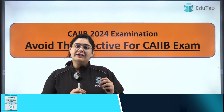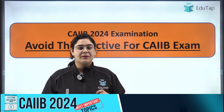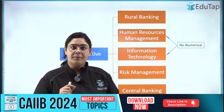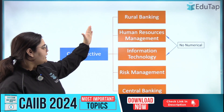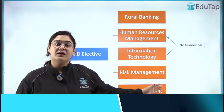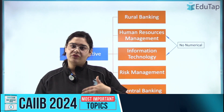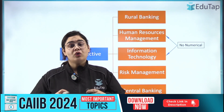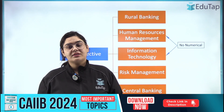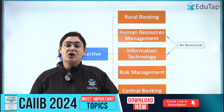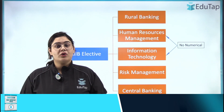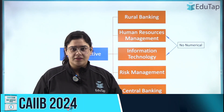If we talk about the CAP exam, we have 4 compulsory subjects which you have to clear and score 50 marks in. For electives, you have 5 options and you have to select one elective subject and score 50 marks in it. We are talking about which subject will be beneficial, which will be easy, and which should be avoided.